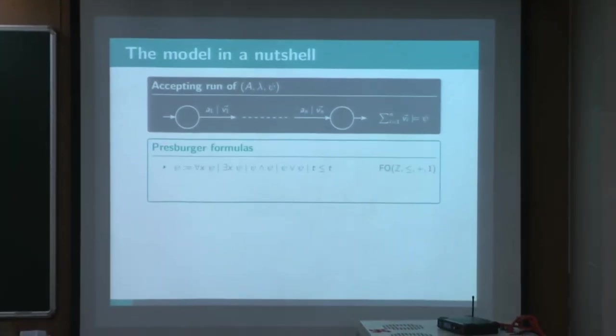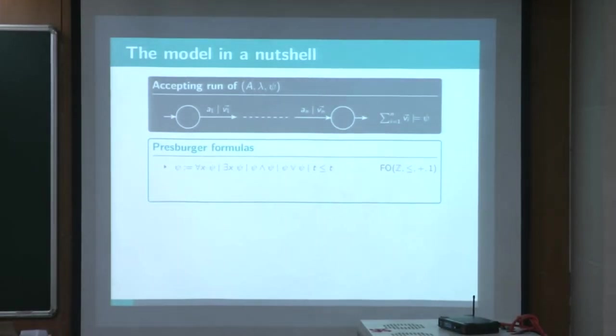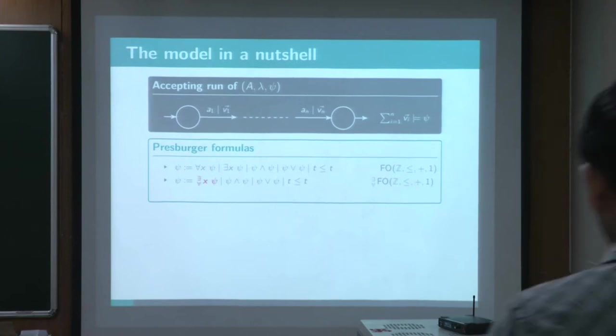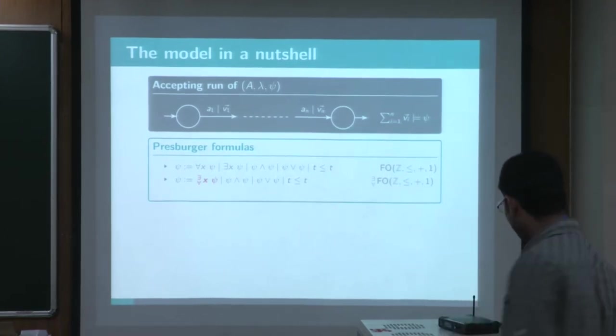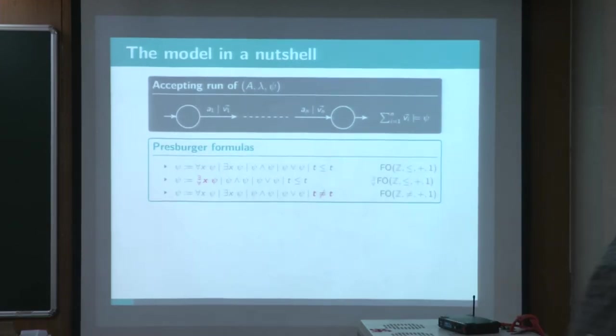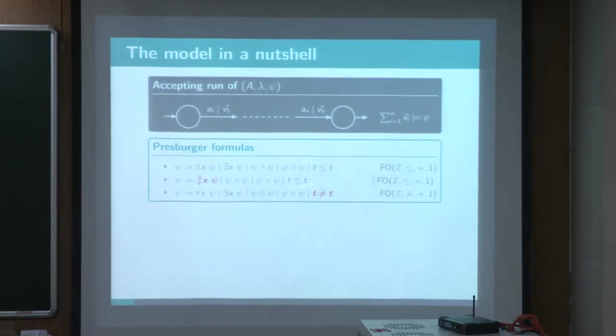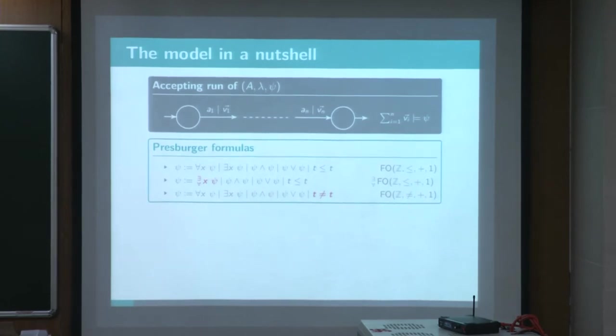So this formula is defined as follows. It's basically the first order with the integer structure, with the order. A formula can be universal or existential if there is only one kind of quantifier respectively. And I will also mention formula. So basically it's the same definition, but here I took non-equality instead of the order. In most of my presentation, I will consider existential Pressburger formula because this is the most considered in the literature.